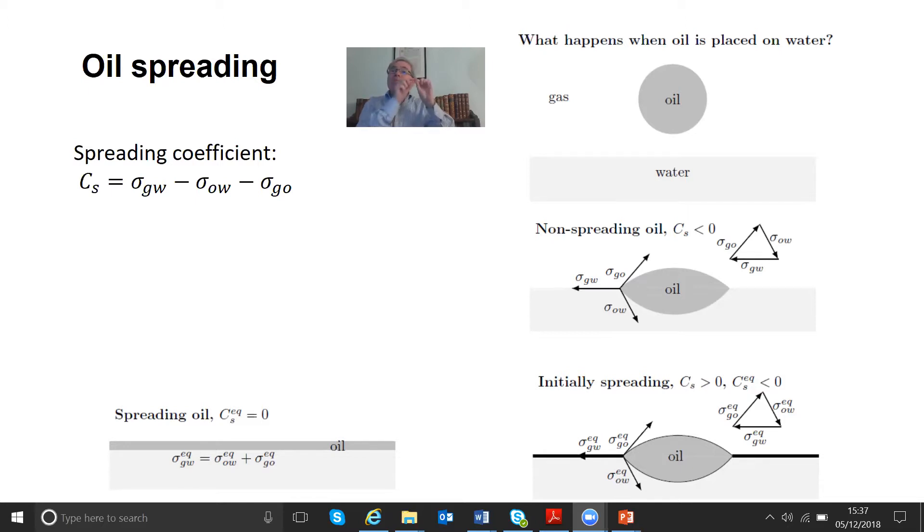This is where the interfacial tensions are now the interfacial energy, say between gas and water, but with this film of oil present. If the oil wants to spread, if it forms this film, it's thermodynamically favorable. This lowers the energy, so the interfacial tensions in equilibrium are lower.